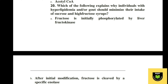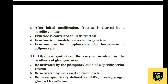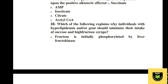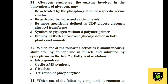Question 20. Which of the following explains why individuals with hyperlipidemia and/or gout should minimize their intake of sucrose and high-fructose syrup? A fructose is initially phosphorylated by liver fructokinase, B after initial modification fructose is cleaved by a specific aldolase, C fructose is converted to UDP-fructose, D fructose is ultimately converted to galactose, E fructose can be phosphorylated by hexokinase in adipose cells. The correct option is A, fructose is initially phosphorylated by liver fructokinase.